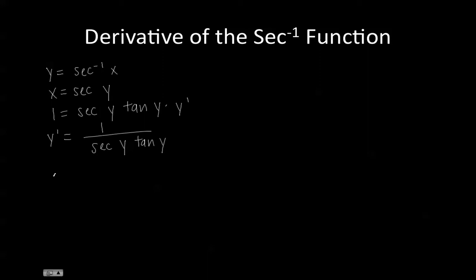To set up our triangle, we need to know that the range of values for y goes from 0 to pi divided by 2, not including pi divided by 2, and ends at pi. So all our y values are going to be positive.